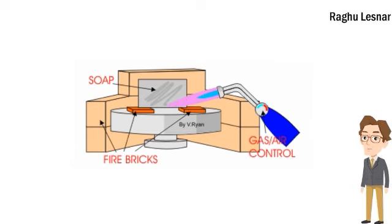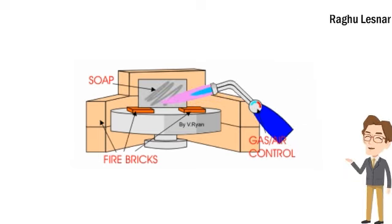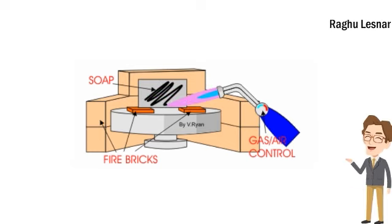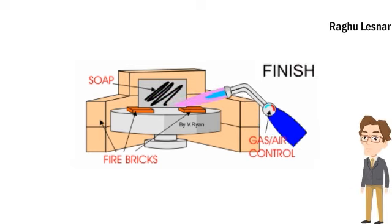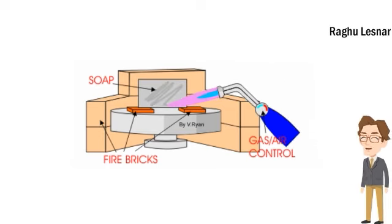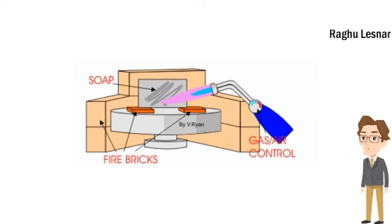Annealing is a heat treatment process used mostly to increase the ductility and reduce the hardness of a material. This change in hardness and ductility is a result of the reduction of dislocations in the crystal structure of the material being annealed.